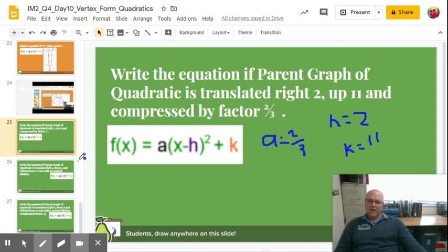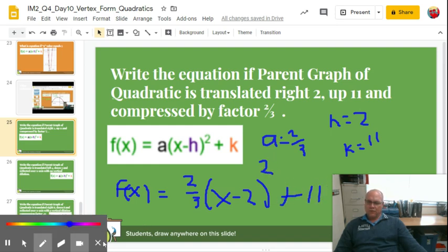So we're going to take that, put it into our function. So f of x, or you can say y equals if you want. F of x equals two-thirds multiplied by x minus 2 squared and then plus 11. There's our first one.